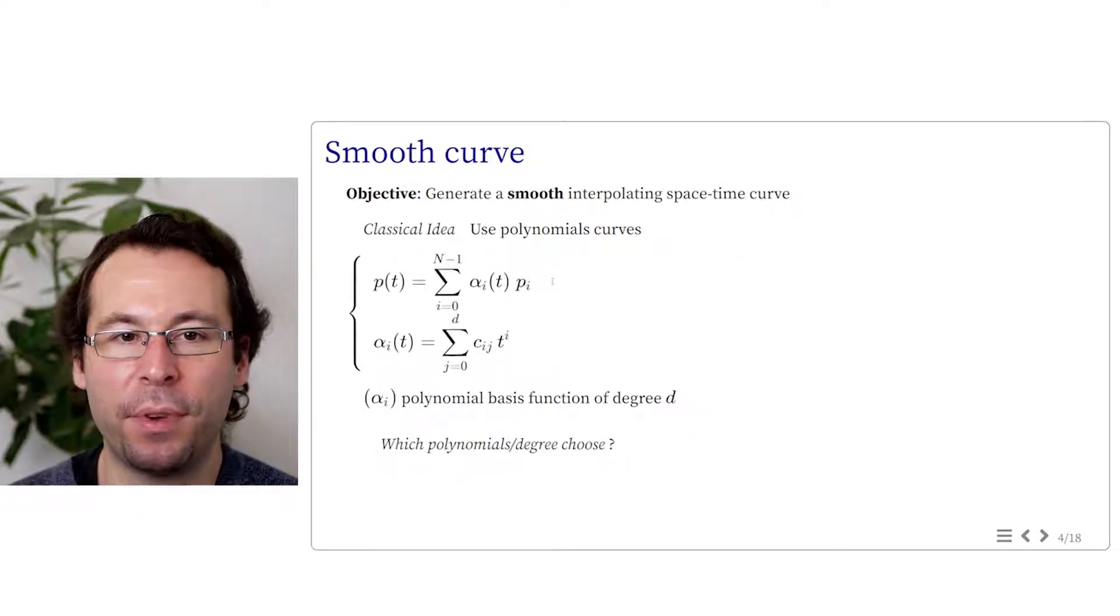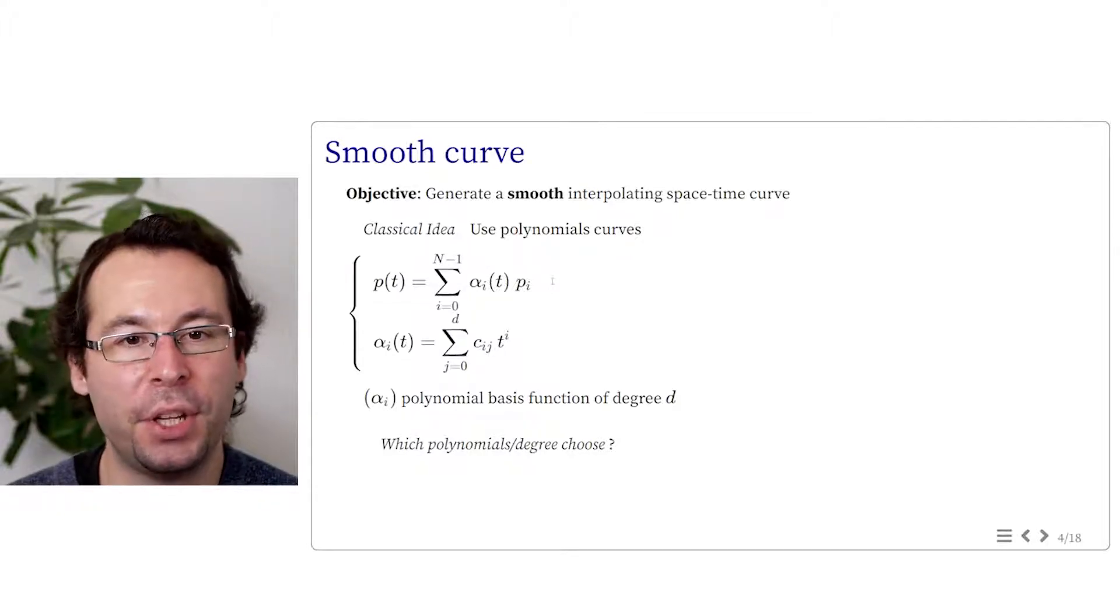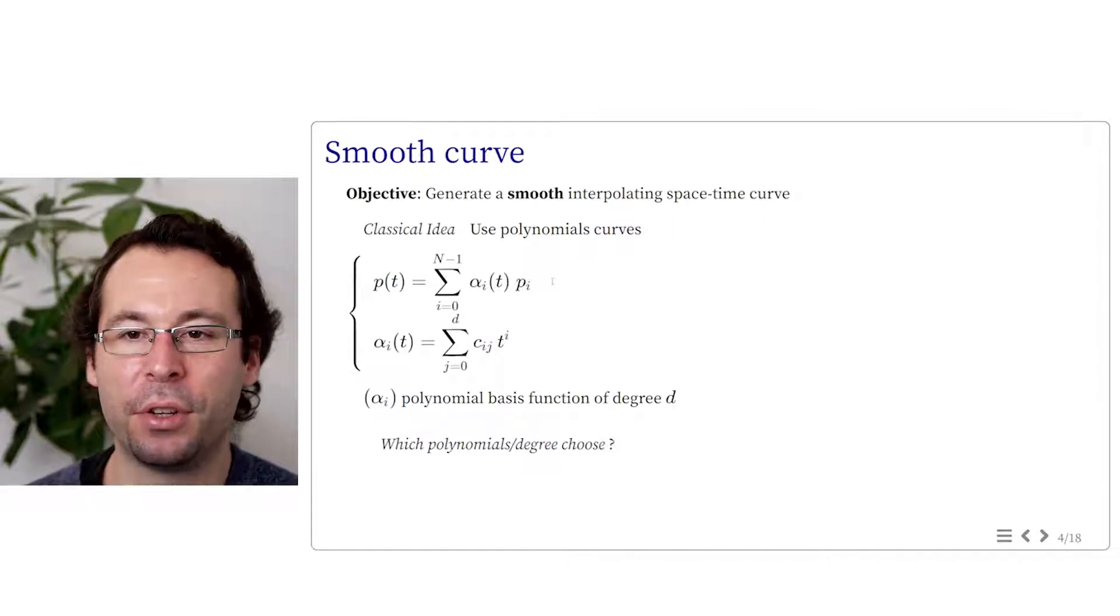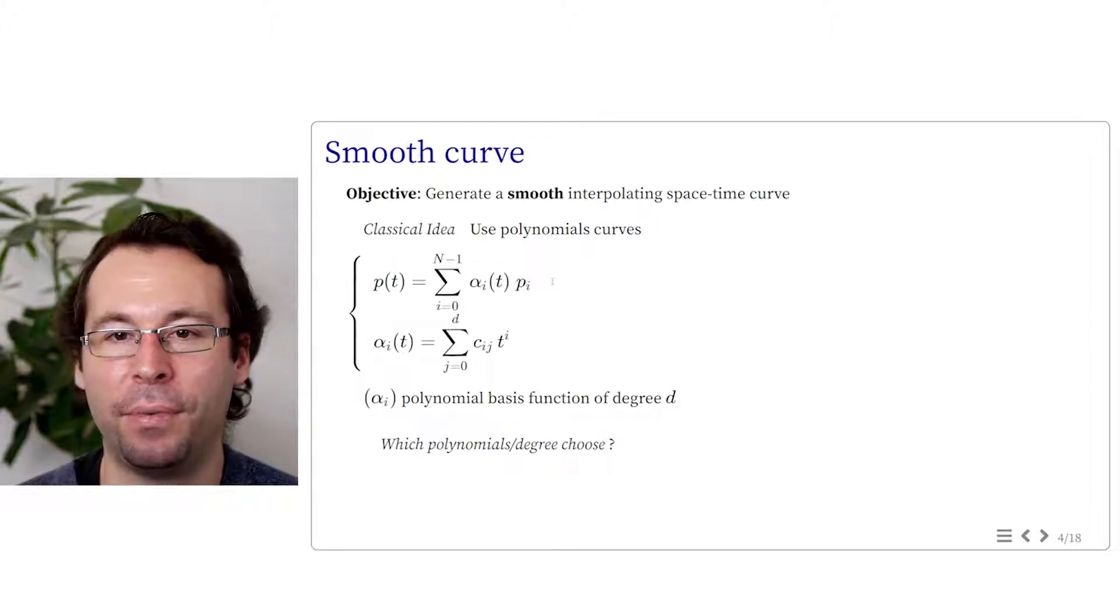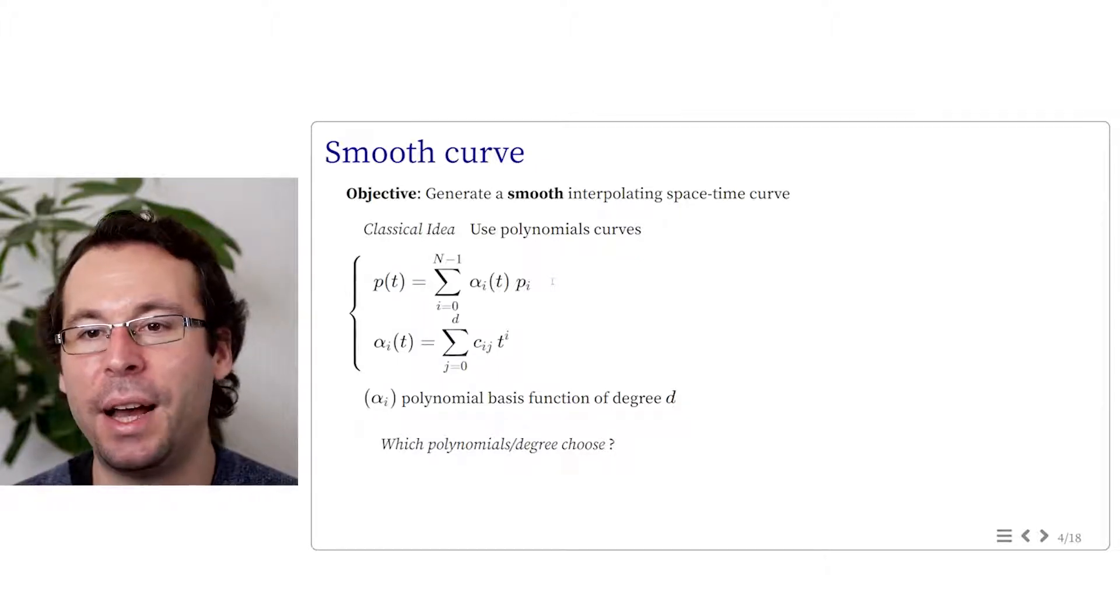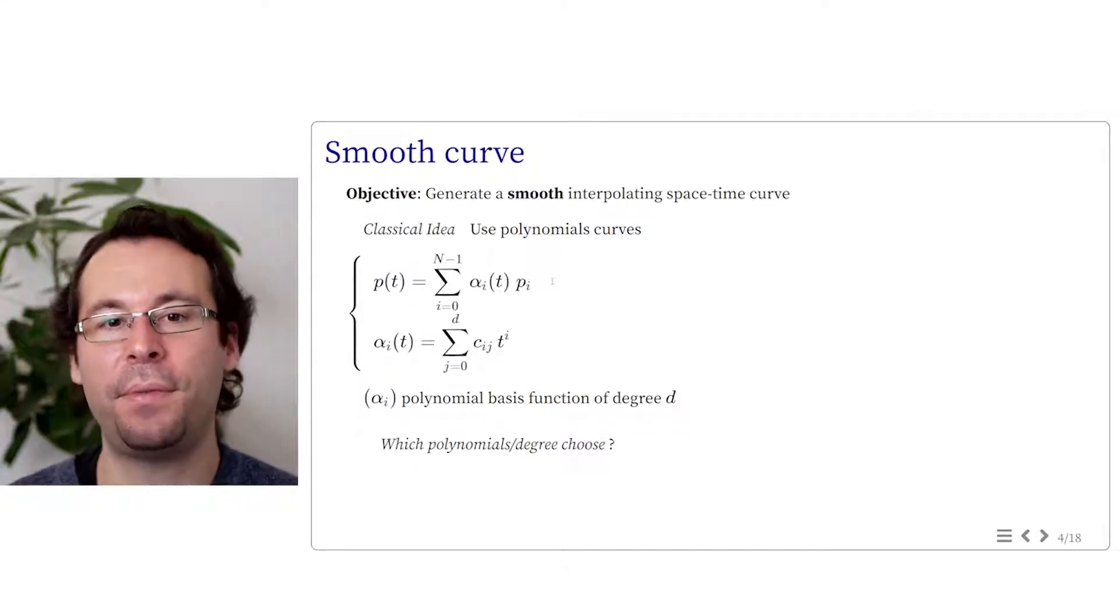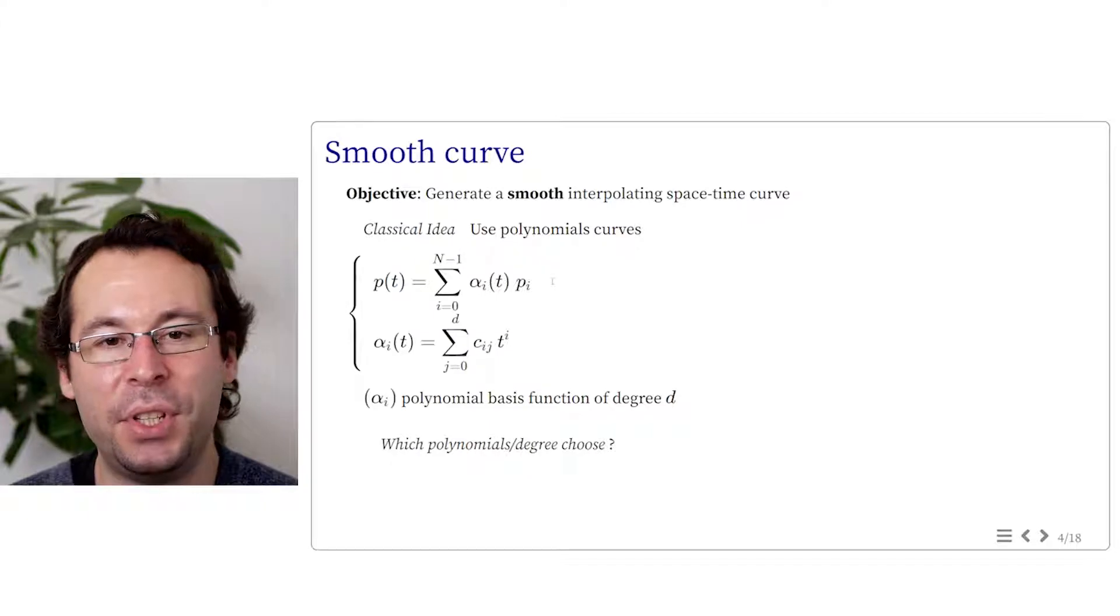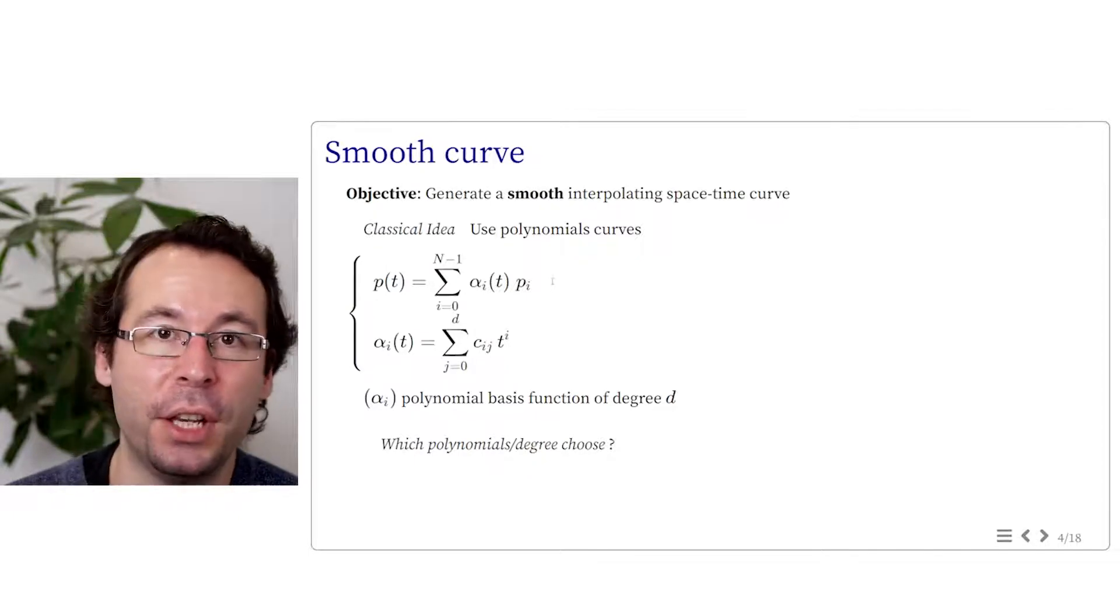Usually when we are looking for smooth curves, we can look at the use of polynomial curves. In increasing the degrees of the polynomials, we can achieve any degrees of continuity. In the general form, we are looking at a polynomial curve P of t given by the sum of i of alpha i times pi, where pi are the key positions and alpha i is a polynomial basis function of degree d. The question now is which polynomials and which degree should I choose?